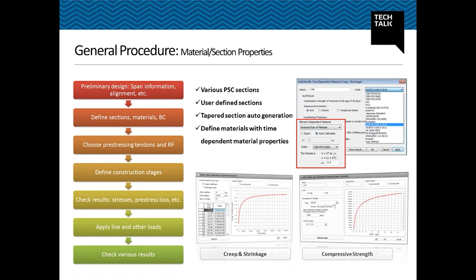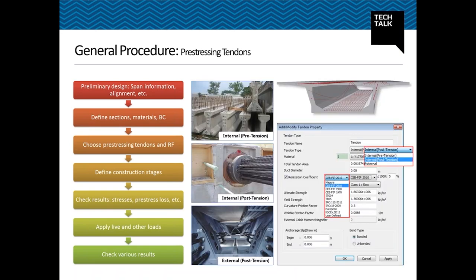Various codes are provided for time-dependent properties, such as CEB-FIP, AS 5100, AASHTO, ACI, and European codes. Once input values are defined, time-dependent material properties can be checked in graph format. You can link these properties to previously defined material properties. For tapered sections, the hypothetical thickness differs for every element, but it can be automatically updated by the program — you don't have to calculate it manually for each element.